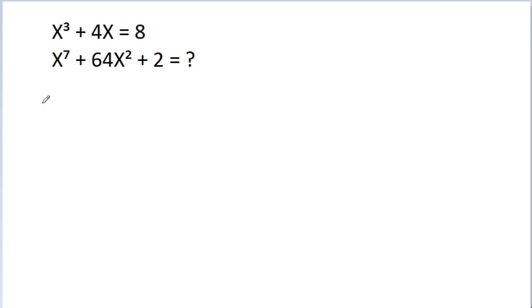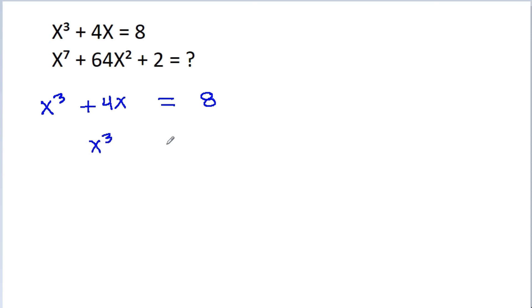So, we have x cube plus 4x is equal to 8, and x cube will be equal to 8 minus 4x. And we have x power 7.